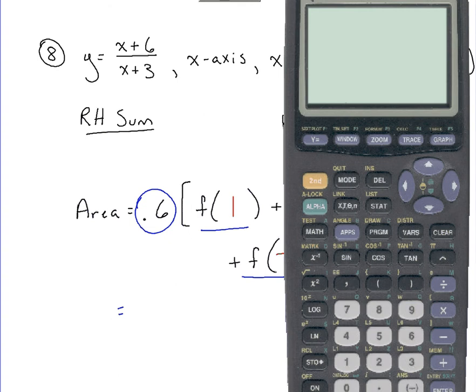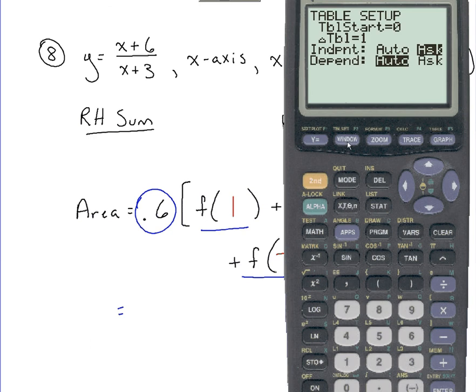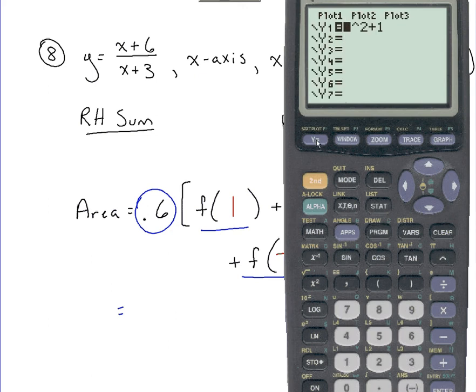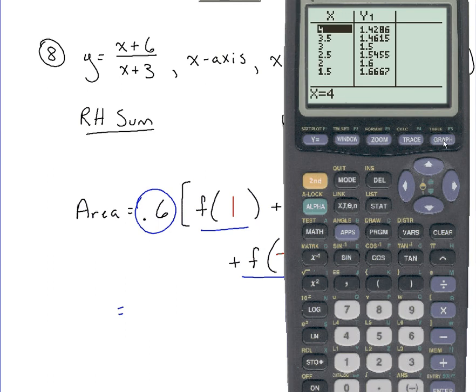So on the calculator, I'm going to go to my table setup, which is second window. I'm going to make sure that the independent variable here is on ask. I'm then going to go to y equals, clear out anything I have there for y equals, insert my function, which is x plus 6 over x plus 3. Now I'm going to go to my table. That's second graph. I have values in there for x currently. That's fine. I'm just going to enter in over those values. And the values I'm going to enter in, I'm going to start with this 1 here that I'm plugging into the function. In the y column, it gives me 1.75. So now I know the value of this function when x is 1 is 1.75. I can use that in my calculation.